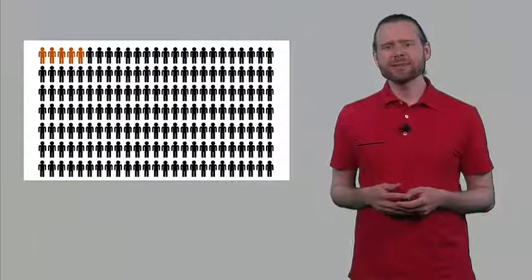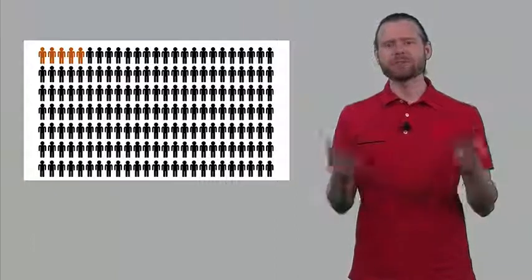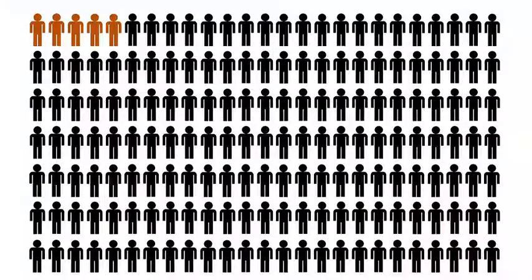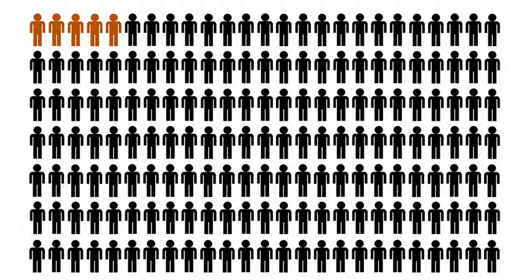Let's visualize this by looking at a large population of individuals. In this population we see that about 3% of the individuals, the red ones in the corner, are actually sick and have this illness. That means that 97% of the people are not sick to begin with. So this is a situation where the prior probability of being sick is actually quite low.